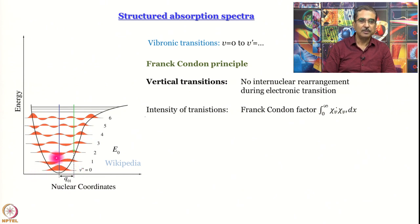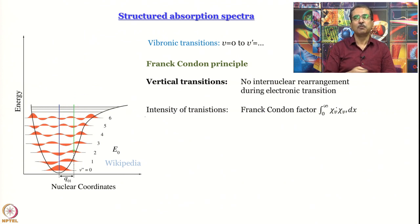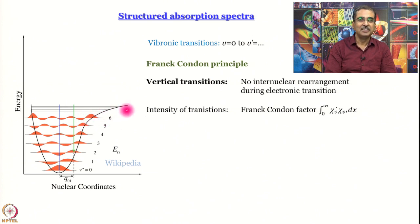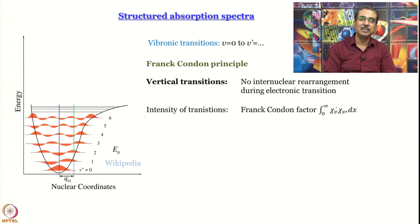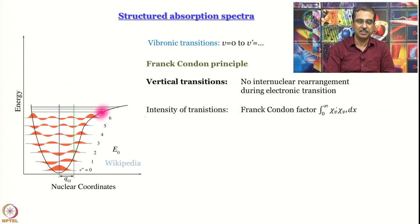As you go higher up, the number of nodes increases much like the particle-in-a-box problem, but these wave functions are not sine functions. These wave functions extend a little beyond the potential energy surface because quantization arises from boundary conditions — the wave functions must vanish at internuclear separations of positive and negative infinity. That is why they extend beyond the potential energy surface.